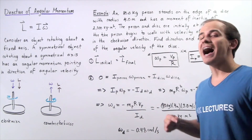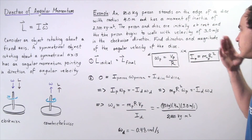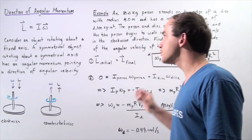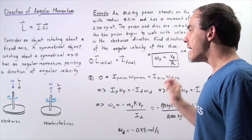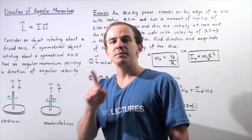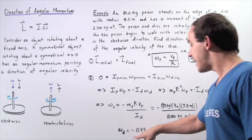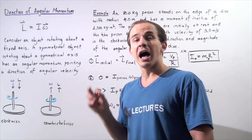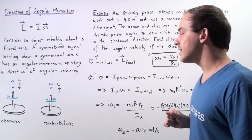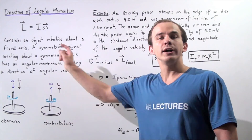The direction is opposite to the direction of the person. Since the person is walking clockwise, the person's angular momentum and angular velocity point downward. But because the disk is rotating in the opposite direction — indicated by the negative sign — it's rotating counter-clockwise. That means the angular velocity and angular momentum of the disk point in the opposite direction: they point upward.